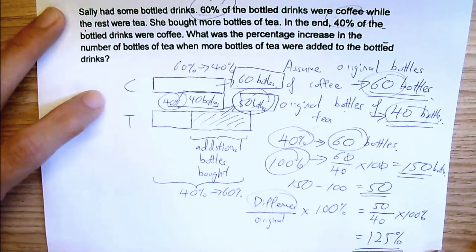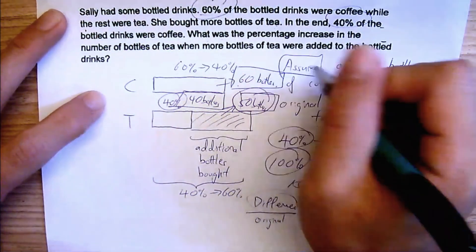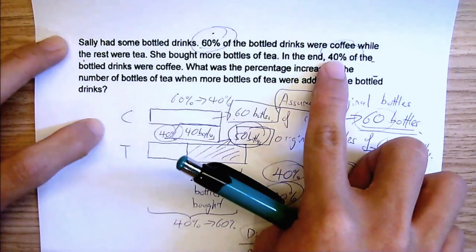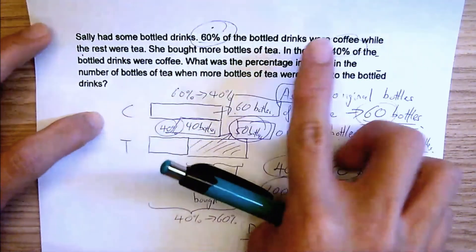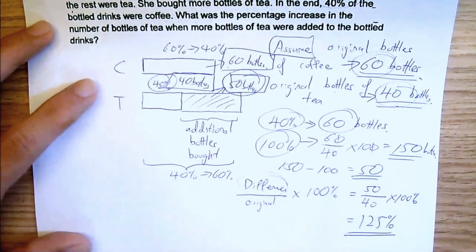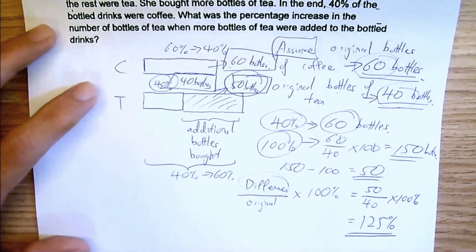So for this one, use the assumption method. If all they have given you are just percentage or like fractions or like ratio, just use the assumption method and you'll be able to get the answer.